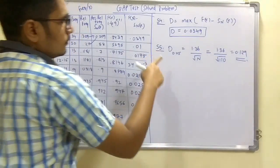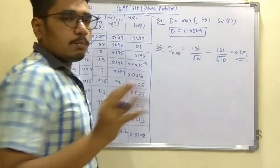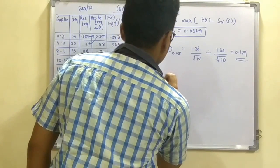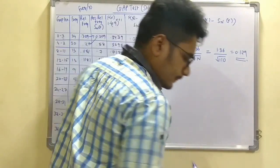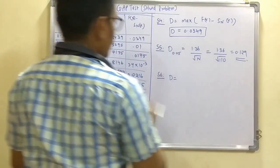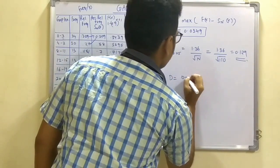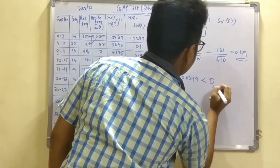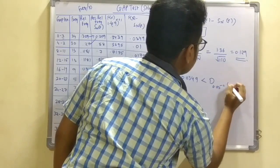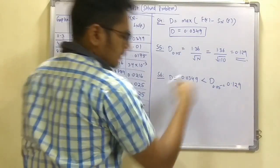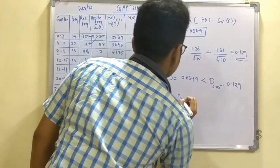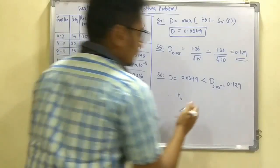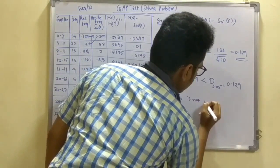In step 6 — the final step — compare d with d_alpha: d = 0.0349 is less than d_0.05 = 0.129. Since d < d_alpha, H0 is not rejected. Therefore the hypothesis that the digits are independently distributed is accepted.